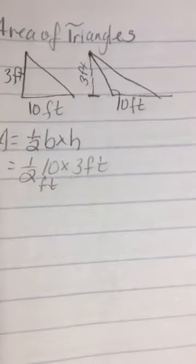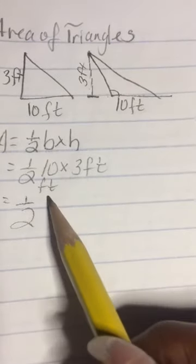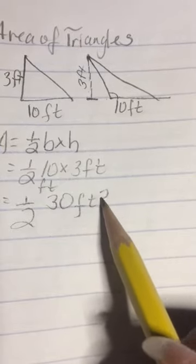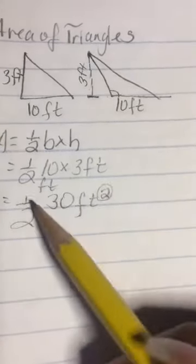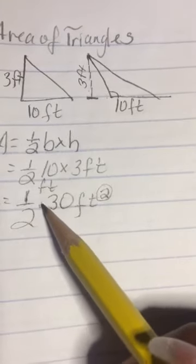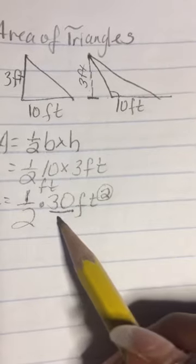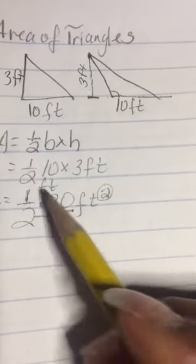So if you multiply 10 times 3, we get 30 feet squared, because remember area always has a little 2 in the air, and a half times 30. A half of 30 we know is 15. But if we're multiplying fractions, we can just multiply straight across.